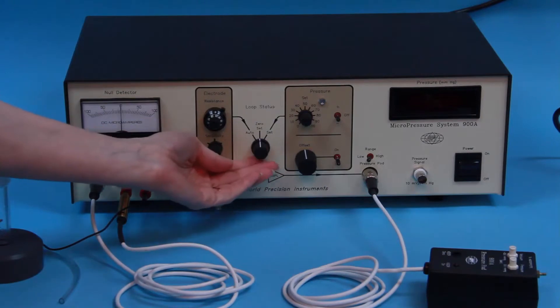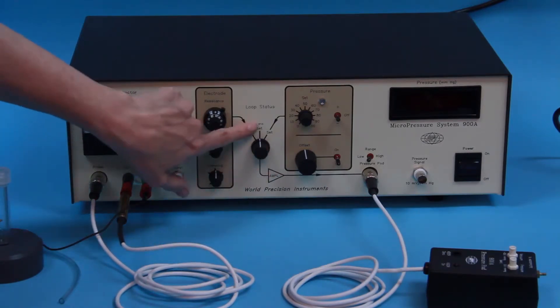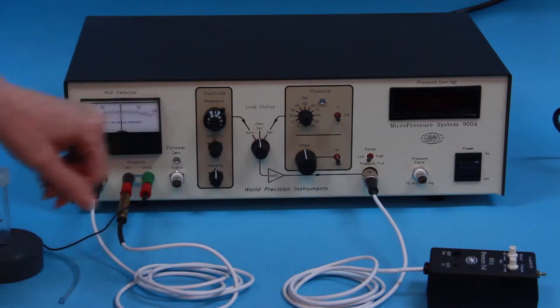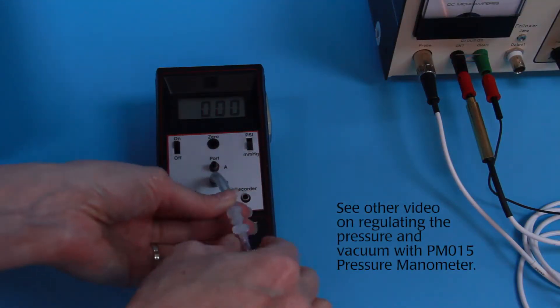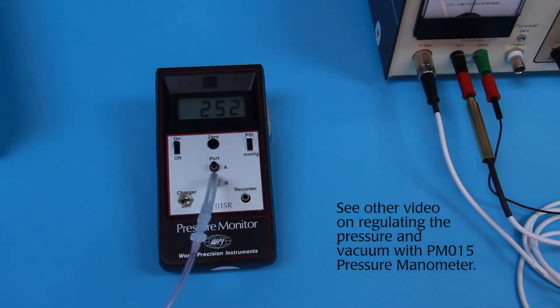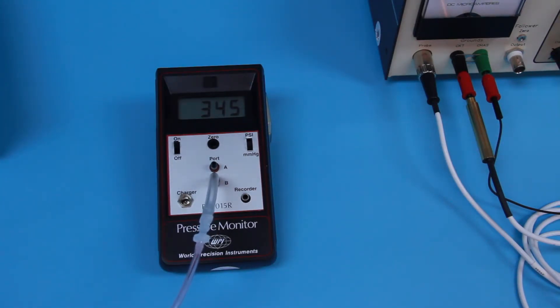Then we need to re-zero after pressure and vacuum are applied. Make sure the system is still in zero set mode. The sources of pressure and vacuum for the 900A pressure pod should be regulated to approximately plus 350 millimeters of mercury for the pressure and minus 150 millimeters of mercury for the vacuum.